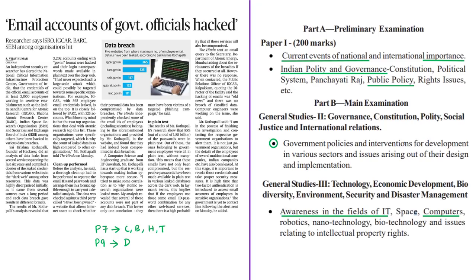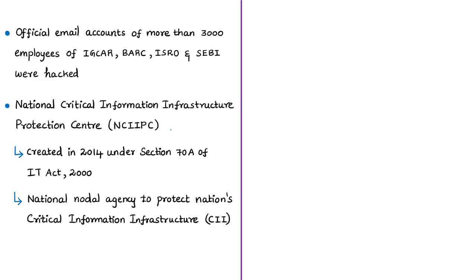The next news article is about recent reports that sensitive data of employees working in strategic and sensitive government institutions has been compromised by hacking. Based on concerns raised by an independent cyber security researcher, information or credentials of official email accounts of more than 3,000 government employees were hacked. These are employees working in institutions such as the Indira Gandhi Centre for Atomic Research, Bhabha Atomic Research Centre, the Indian Space Research Organisation, and the Securities and Exchange Board of India.